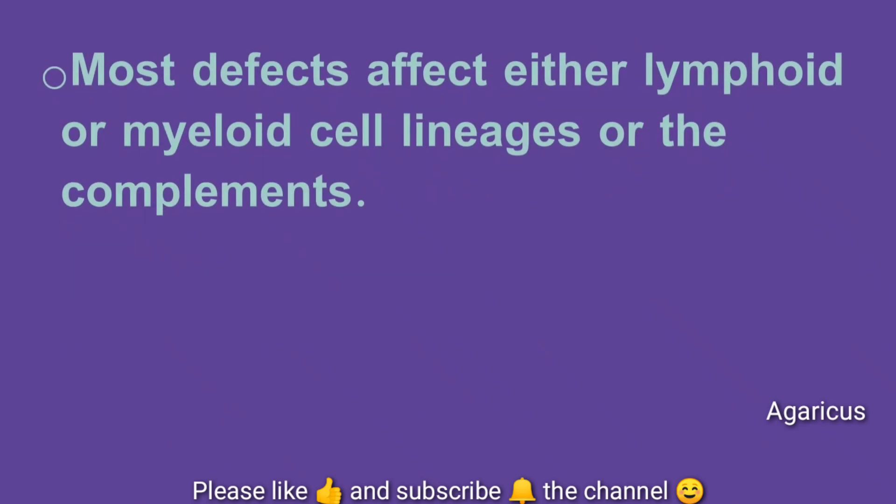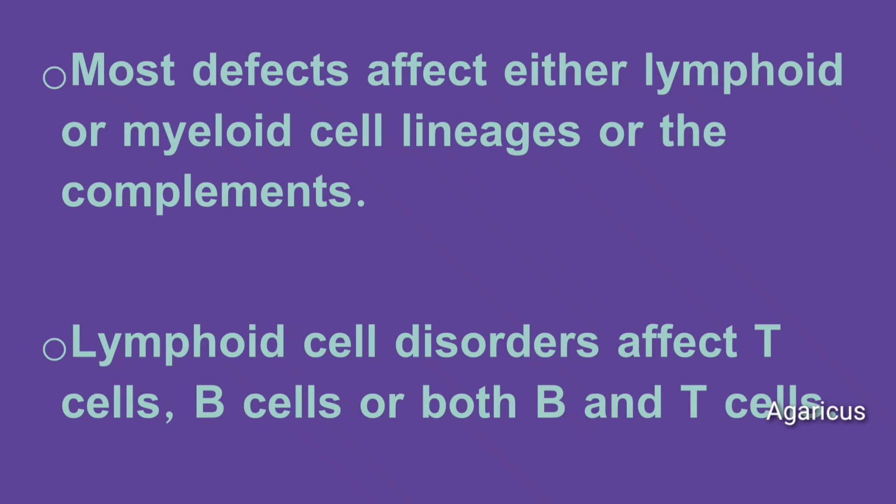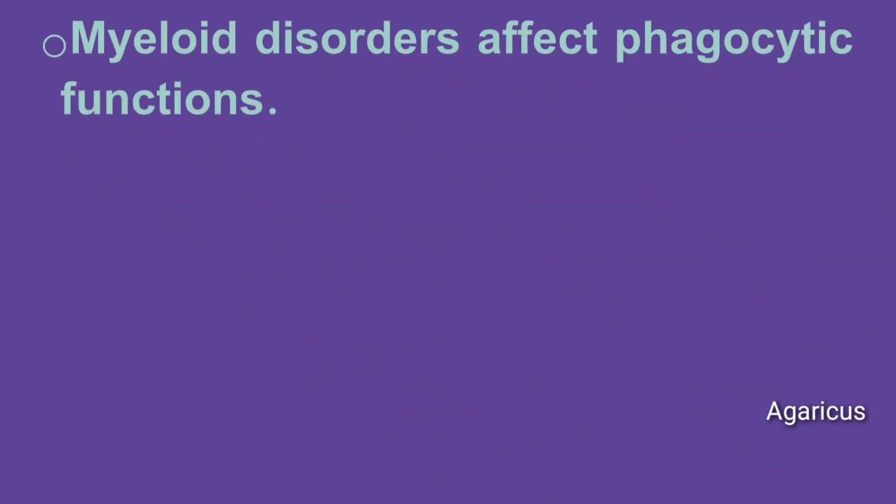Most defects affect either the lymphoid or myeloid cell lineage, or the complement system. Lymphoid refers to white blood cells; myeloid refers to granulocytes. Lymphoid cell disorders affect T cells, B cells, or both B and T cells. Myeloid disorders affect phagocytic functions.